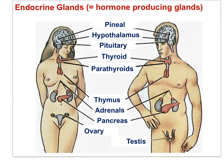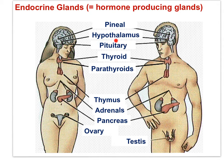Endocrine glands involved in sexual reproduction include the sexual organs. The testes produce testosterone, and the ovaries produce estrogen and progesterone. Spermatogenesis and oogenesis are controlled by two hormones originating from the anterior pituitary: FSH, follicle-stimulating hormone, and LH, luteinizing hormone. Lastly, oxytocin, produced by the hypothalamus and released through the posterior pituitary, is involved in stimulating uterine contractions at birth and milk release following birth.